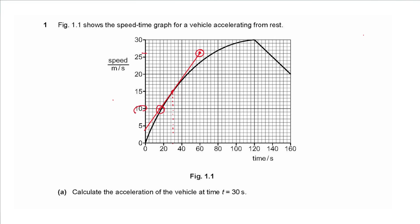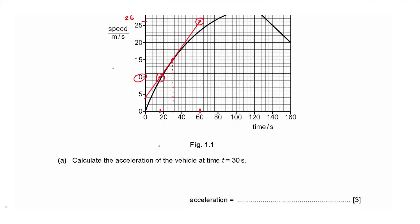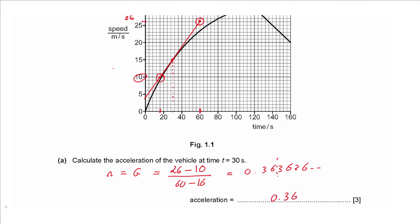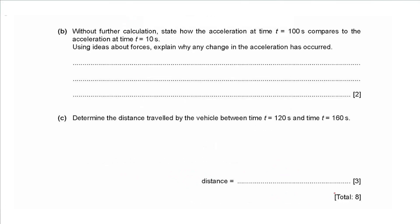I'll take point two and point one: y2 and y1 are 26 and 10, x2 is at 60 and x1 is at 16. The acceleration equals the gradient, so we substitute: 26 minus 10 over 60 minus 16, giving 0.3636 recurring. Approximated to two significant figures — since the graph gives us two significant figures — the answer is 0.36 meters per second squared.